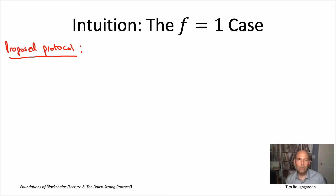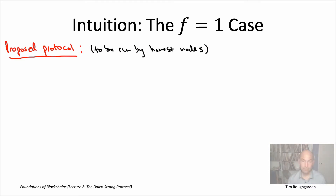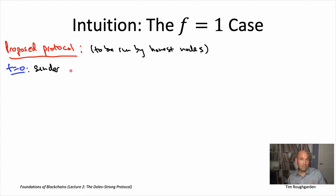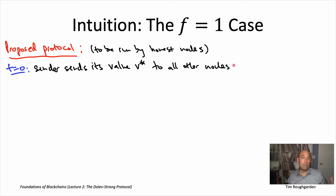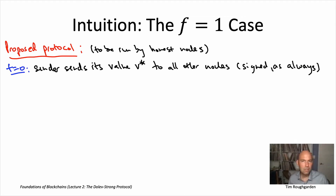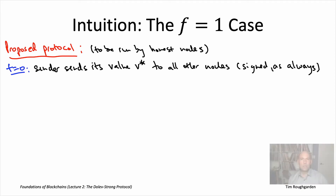Here's maybe the simplest possible protocol that makes use of that idea. When we write down a protocol, we mean what it is that honest nodes do — Byzantine nodes can throw out this protocol and do whatever they like. Let's call the first time step t equals zero. The natural way to start is by having the sender, who has this private input they want to communicate, send that value to all of the other nodes. And our default assumption is that when one node sends a message to another node, the sender will sign it cryptographically.